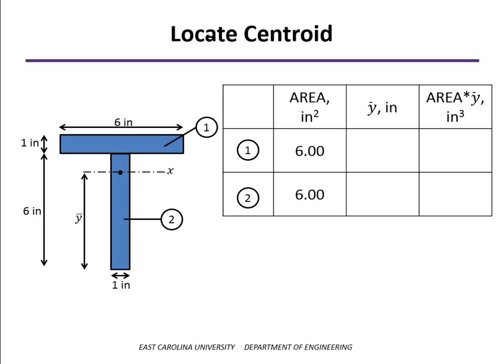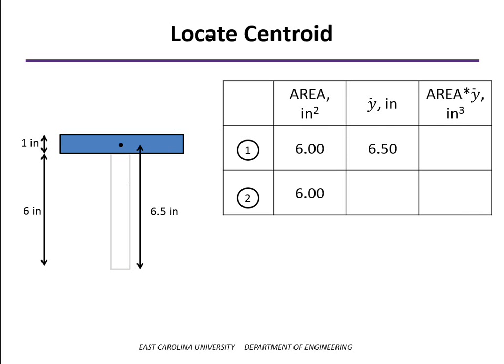In this case, both of our areas are 6 square inches. For the flange, the distance from the bottom of the section up to its centroid is 6 inches plus half of the thickness of the flange, or 6.5 inches.